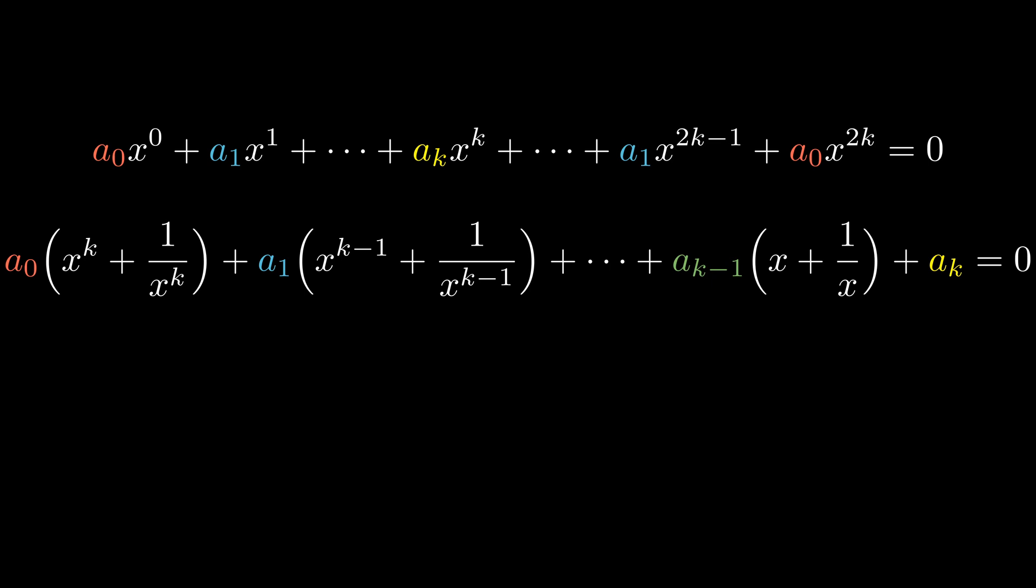First, divide by x to the kth power. Second, factor out the terms with the same constants. And finally, apply the variable change X equals x plus 1 over x. And that's it.